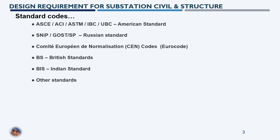European standards are generally referred to as CEN — Committee for European Normalization — codes, also called Eurocode or EN. BS is the British Standard. BIS is the Bureau of Indian Standards. Other standards include those from the Philippines, Indonesia, Kazakhstan, Uzbekistan, and also China and Japan standards, though those are not commonly used outside their own countries.